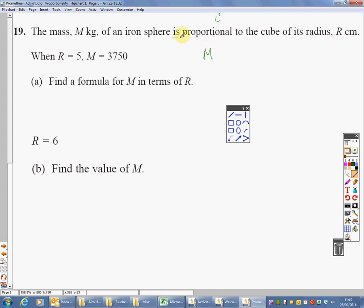So, you know that M is proportional, that's that sign there, to the cube. So, I've got a cube of its radius R. R cubed. M is proportional to R cubed. So, M equals K times R cubed. Find a formula for M in terms of R. Right, we're back to the staged question. M equals K times R cubed.